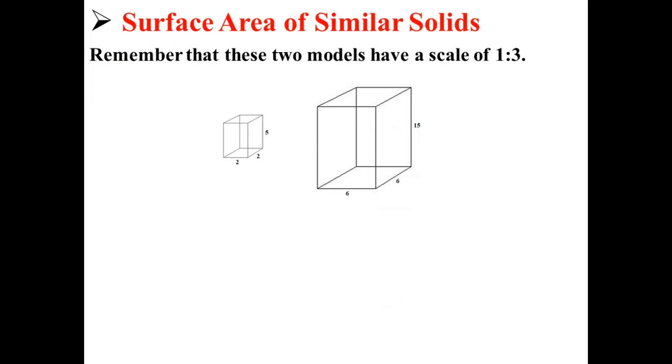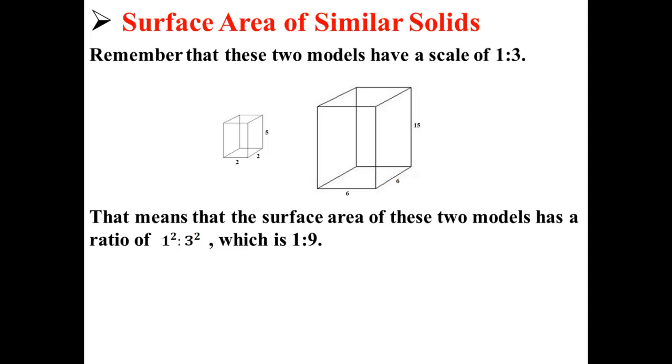Let's go back to our similar solids. Remember that these two models have a scale of 1 to 3. This means that the surface area of these two models has a ratio of 1 squared to 3 squared, which is 1 to 9.